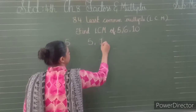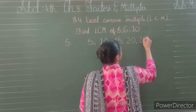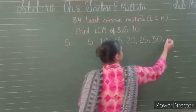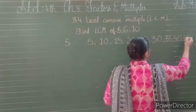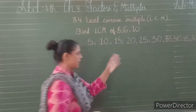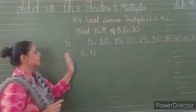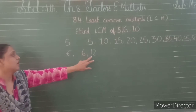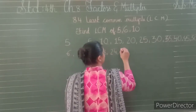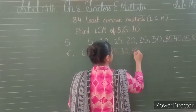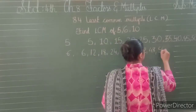Multiples of 5: 5, 10, 15, 20, 25, 30, 35, 40, 45, 50. So till 50 we have found out the multiples of 5. Now multiples of 6 — agar aapko multiples yaad nahi toh aap sirf tables likh sakte: 6 ones are 6, 6 twos are 12, 6 threes are 18, 24, 30, 36, 42, 48.